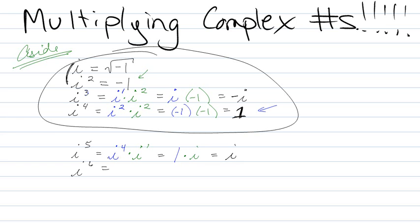i to the sixth is i to the fourth times i to the what? 4 plus what is 6? 2! I am an adding master. So i to the fourth again is still 1. Nothing's changed. But what's i squared? Negative 1. So negative 1 times 1 is negative 1.